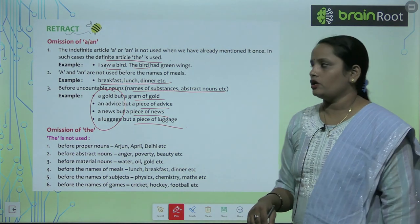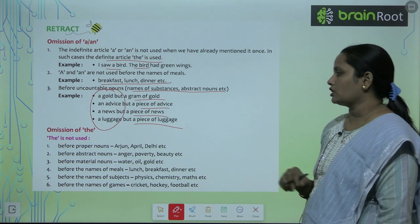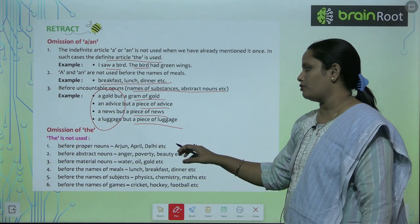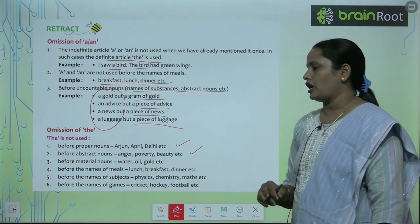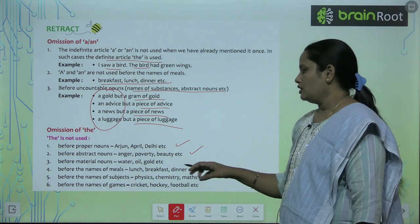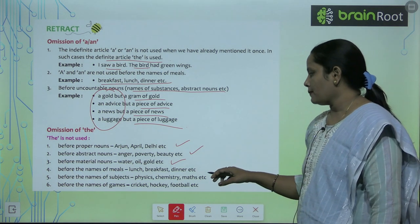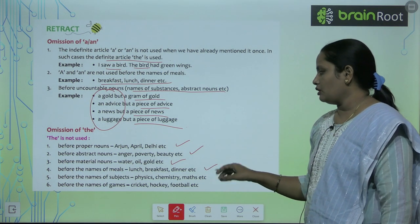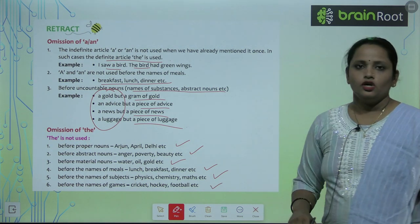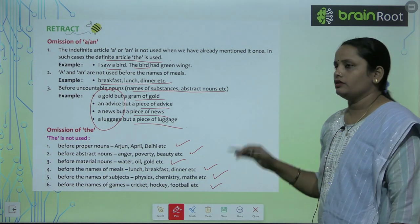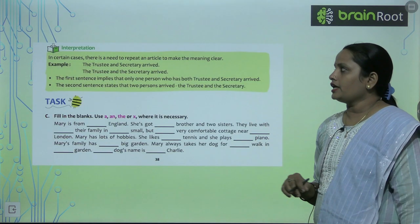Now let's learn omission of 'the.' 'The' is not used before proper nouns, abstract nouns, or material nouns. It is also not used before the names of meals, names of subjects, or names of games.